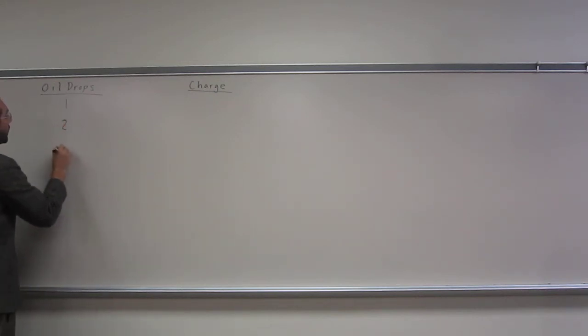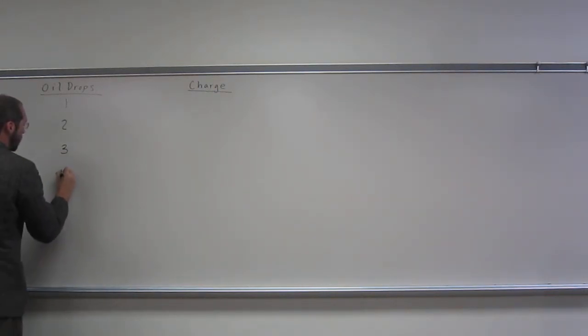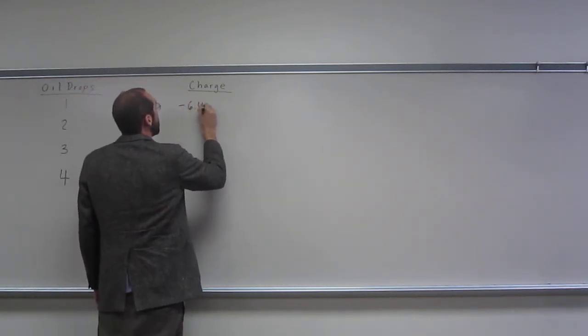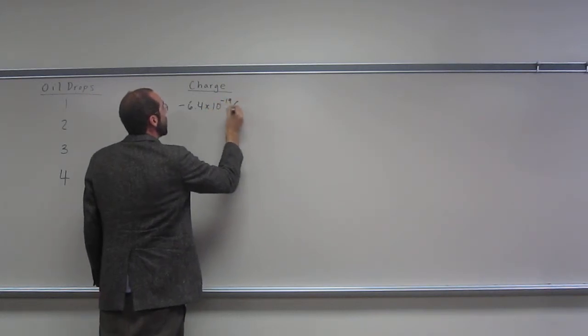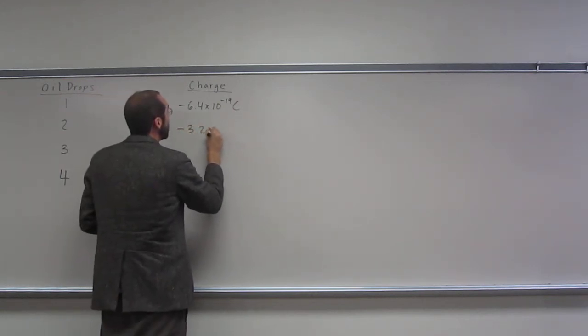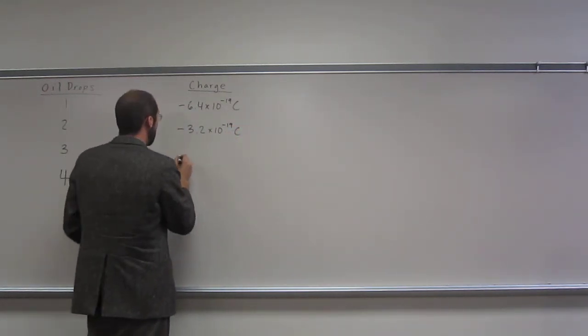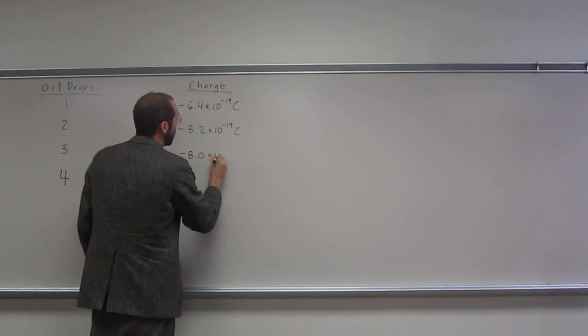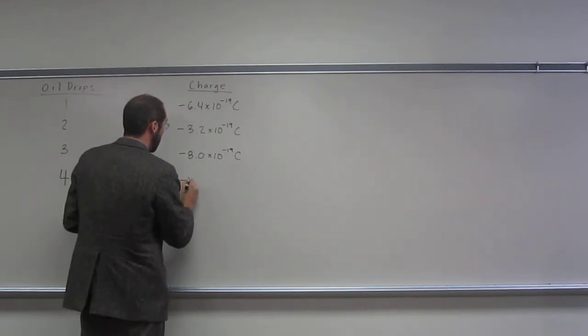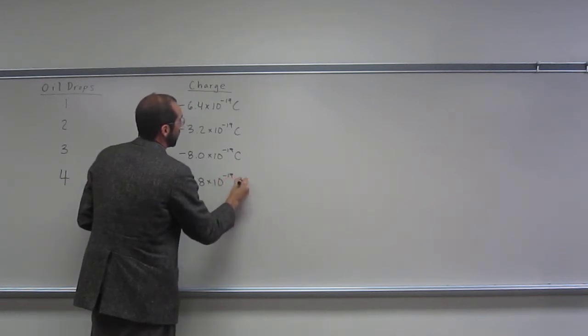One, two, three, four droplets. And then the charge on the first one is negative 6.4 times 10 to the negative 19th Coulombs. Then on the second one, it's negative 3.2 times 10 to the negative 19th Coulombs.